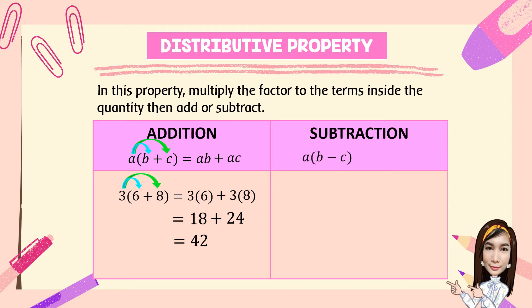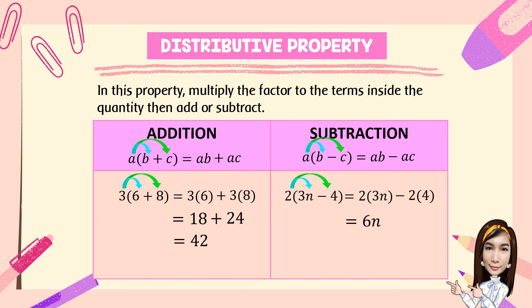For subtraction: A times the quantity (B minus C). We multiply or distribute A to the terms inside the parentheses. A distributed to the first term gives AB, and A multiplied to the second term gives negative AC. For example: 2 times the quantity (3N minus 4). Distribute 2 to the first term 3N, giving 2 times 3N. Then multiply 2 to the second term negative 4, giving negative 2 times 4. Simplifying: 2 times 3N is 6N, and negative 2 times 4 is negative 8. We cannot combine 6N and negative 8, so that is the final answer.